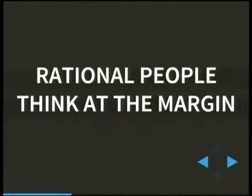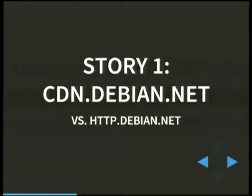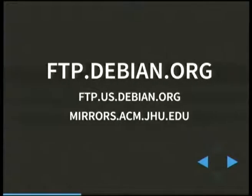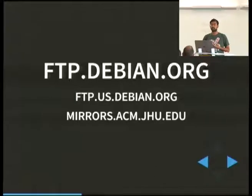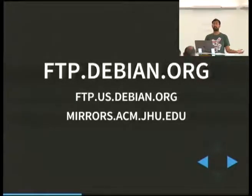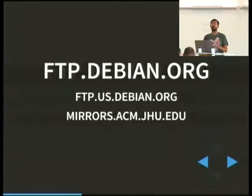The first story is cdn.debian.net versus http.debian.net. It's about mirrors. There's ftp.debian.org and people who run mirrors. I used to run mirrors.acm.jhu.edu — I set it up ten years ago when I was a student at Hopkins, Johns Hopkins University, for two reasons. One is I wanted package downloads to be faster, and the other is, wouldn't it be cool if something I made was in the Debian mirror list? So I made it, and eventually it's in the mirror list.